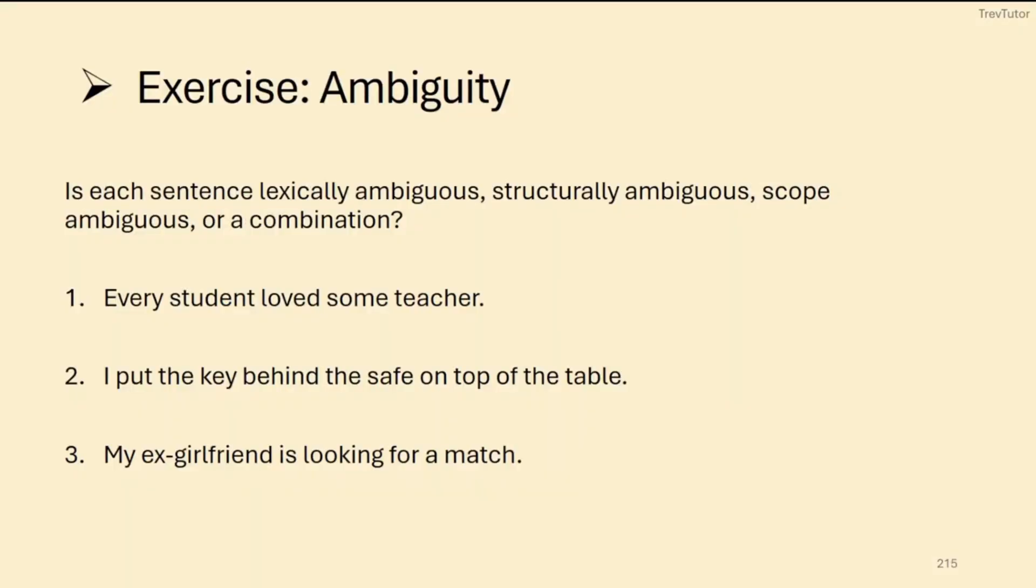So let's see what type of ambiguity is apparent in each of these sentences. So every student loves some teacher. So here's how we can do this. We can say, okay, there's a bunch of different students out there. And there's one particular teacher. And every single student happens to like that one particular teacher.